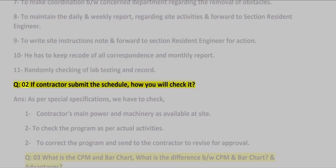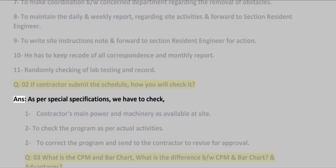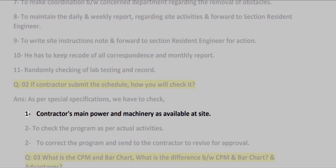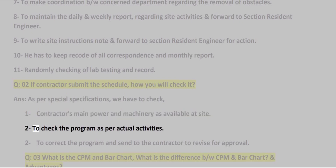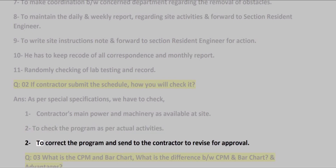Q02: If the contractor submits the schedule, how will you check it? ANS: As per special specifications, we have to check: 1. Contractor's manpower and machinery as available at site. 2. Check the program as per actual activities. 3. Correct the program and send to the contractor to revise for approval.